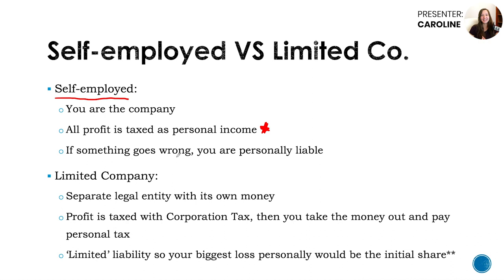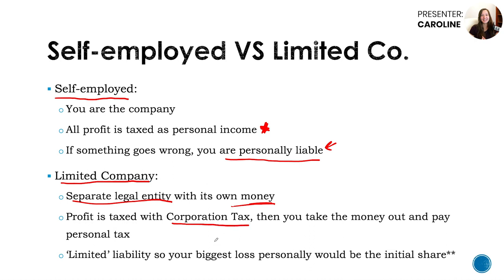This can become a downside when comparing to a limited company. If something goes wrong — say a client isn't happy with your work — even though you can get business insurance, you could be found personally liable. With a limited company, you have a separate legal entity with its own money and its own business bank account. That money is the company's money, and the company's profit is taxed with corporation tax rather than personal income and national insurance as with a sole trader.